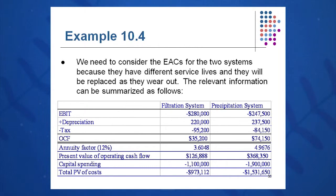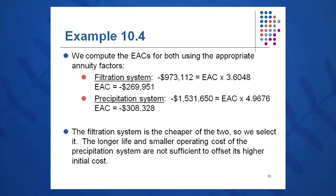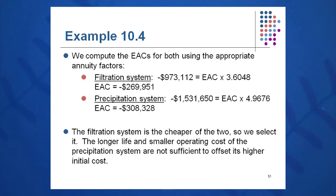After calculating the OCF, I look at the annuity factor and calculate the total present value of cost, then the equivalent annual cost. For the filtration system, the NPV of costs equals negative $973,000, which equals EAC times the present value annuity factor of 3.6048, giving an EAC of approximately negative $270,000. For the precipitation system, I take the NPV and divide by its annuity factor, getting an EAC of negative $308,000. Comparing on an equivalent annual basis — apples to apples, accounting for differing useful lives and maintenance costs — the filtration system is the cheaper option.